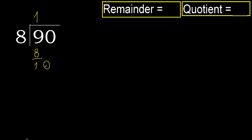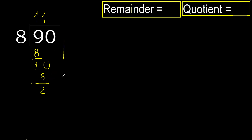Now we have 10. 8 multiplied by 2 is 16, which is greater. Multiplied by 1 is 8, which is not greater. Subtract — remainder is 2. There is no next digit, therefore finish.